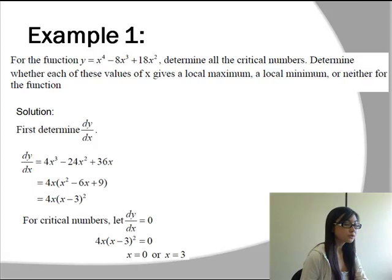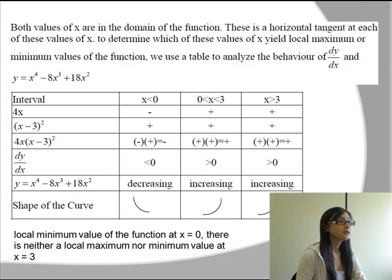To find the critical numbers, we have this derivative equal to 0 in order to find the horizontal tangent of the slope equal to 0. So when we do that, we get x = 0 or x = 3.